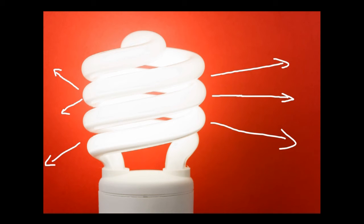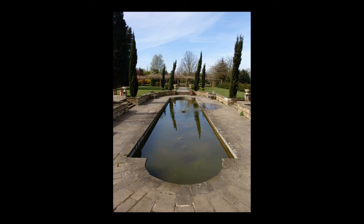I know that's a pretty simple explanation of what light is — it gets a lot more complicated than that — but for the purposes of this, let's just think of light as lines of energy. So light has two main properties: reflection and refraction.